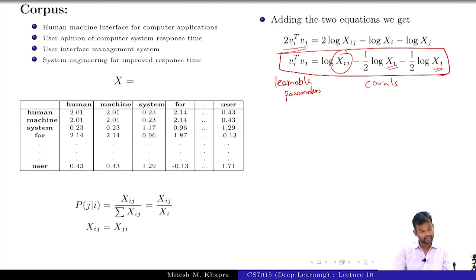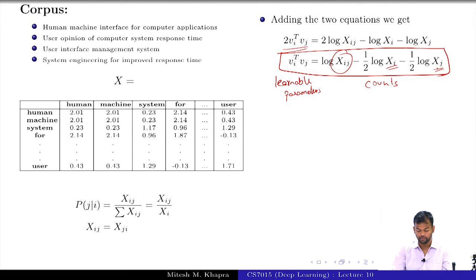So to make the model more flexible, that means give it some more freedom. What I am going to do is instead of log X_I and log X_J, I am going to introduce parameters B_I and B_J. I am saying that these parameters can also be learned. So effectively using all these three I should be able to get this. This is what I desire.